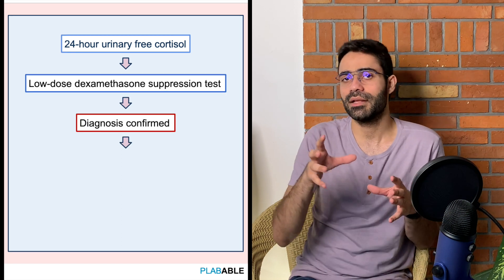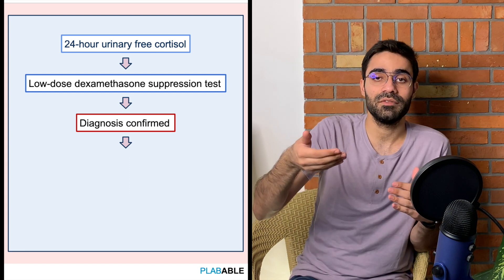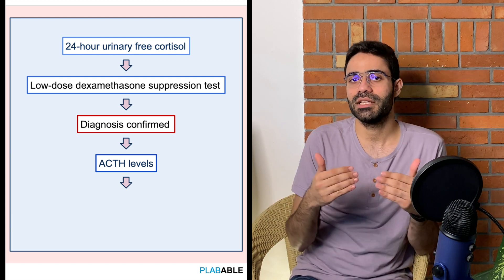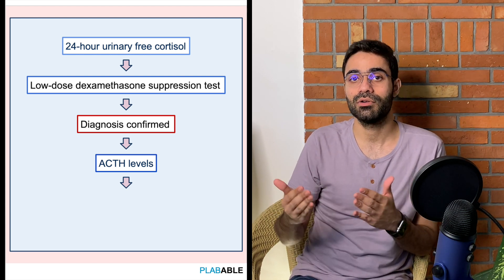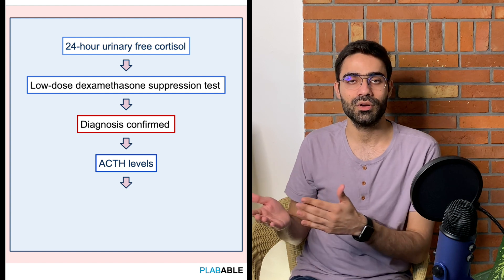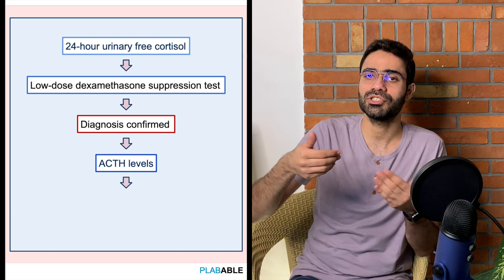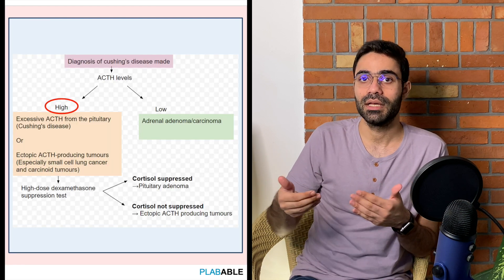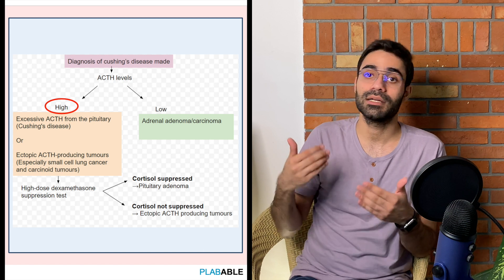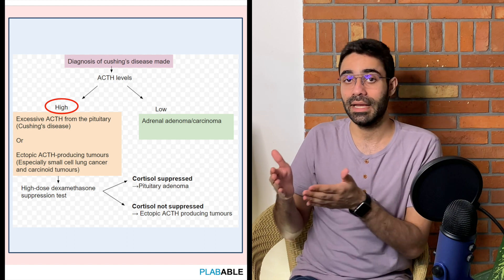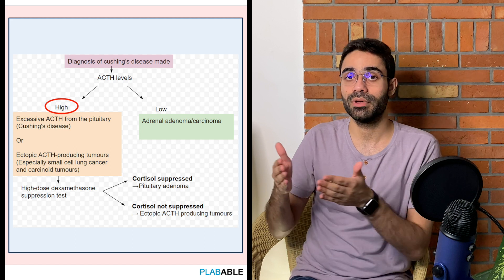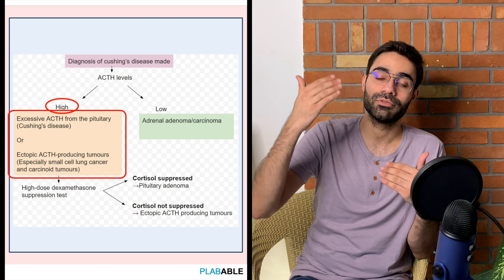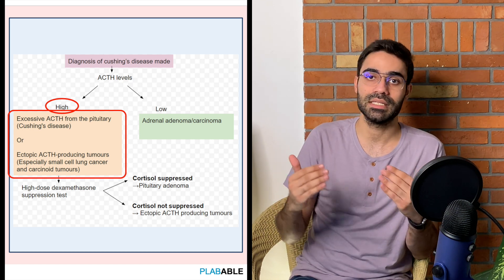Once the diagnosis of Cushing's syndrome is established, we move on to measure plasma ACTH levels. Plasma ACTH levels help us differentiate between ACTH dependent and ACTH independent Cushing's. If ACTH levels come elevated, we move on to localizing the cause — whether it is from an ectopic source like small cell cancer of the lung or from a pituitary adenoma.